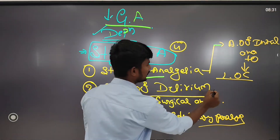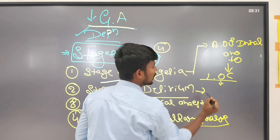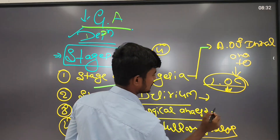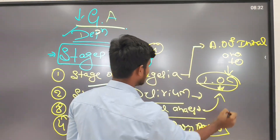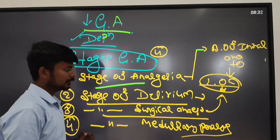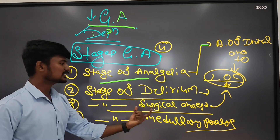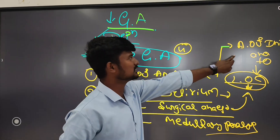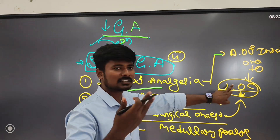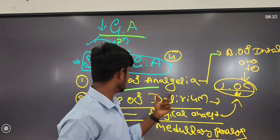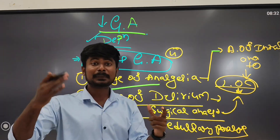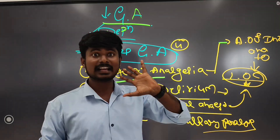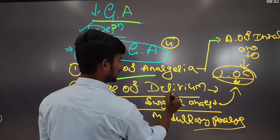In the stage of delirium, after administering inhalational anesthesia and the patient loses consciousness, the patient can exhibit violent and aggressive behavior. Stage 3 is the stage of surgical anesthesia. Stage 4 is medullary paralysis: in this stage, due to overdose of anesthesia, there is total respiratory failure and cardiac arrest, and the patient may die.